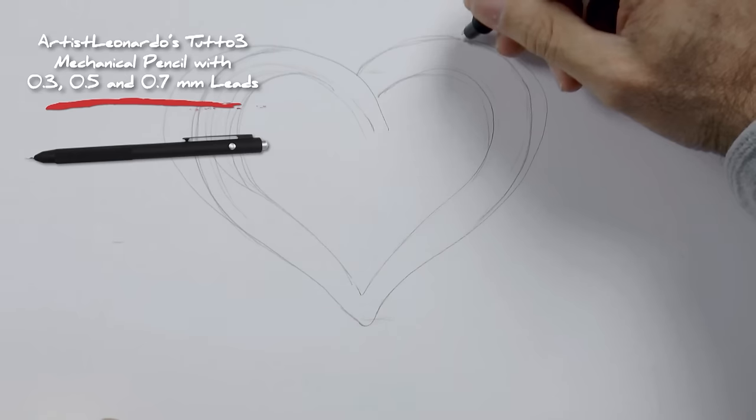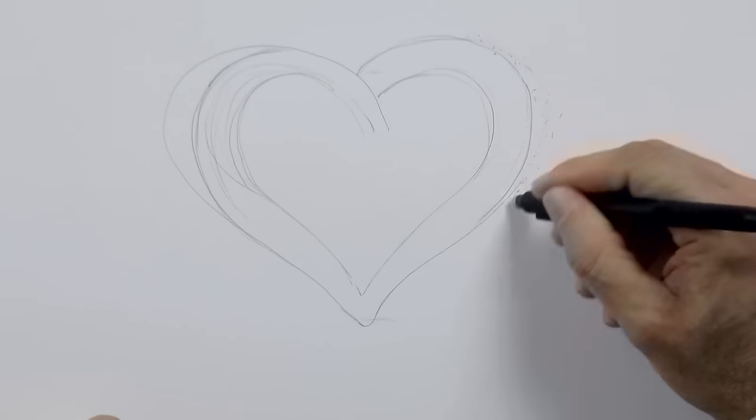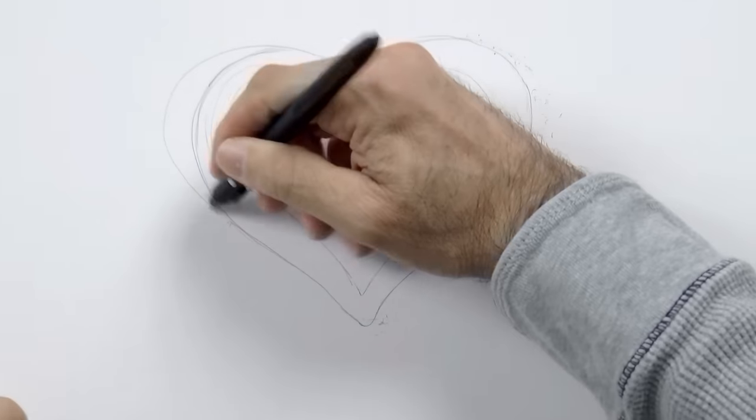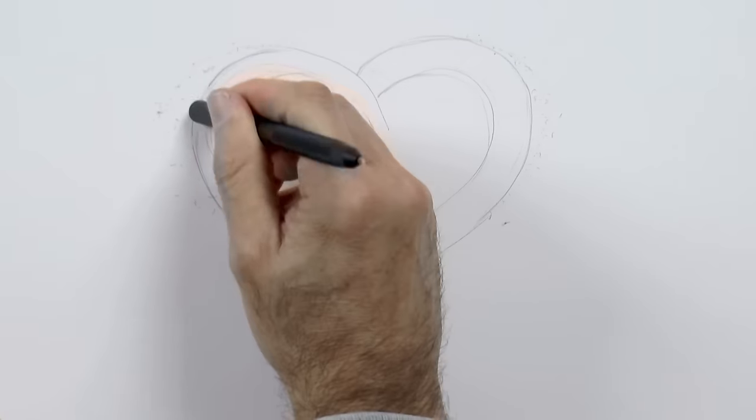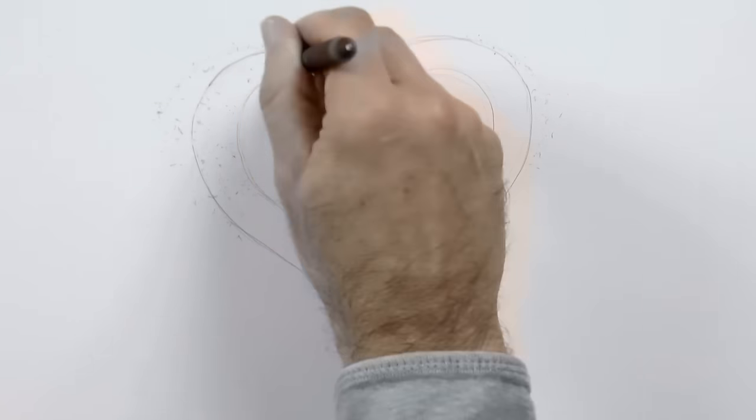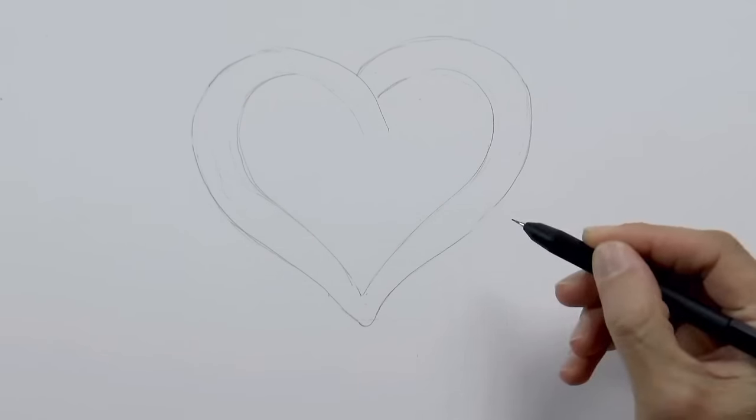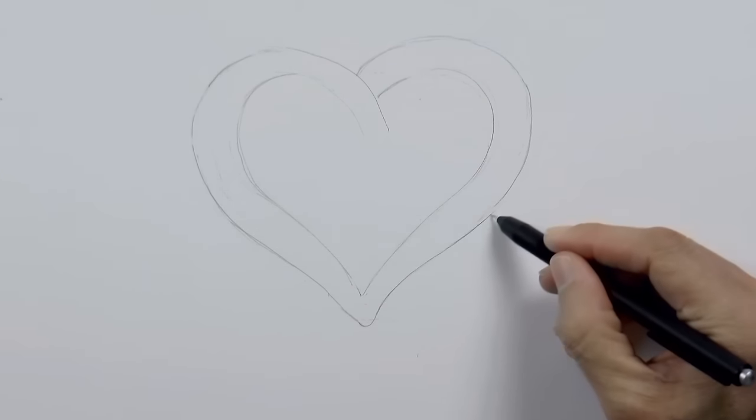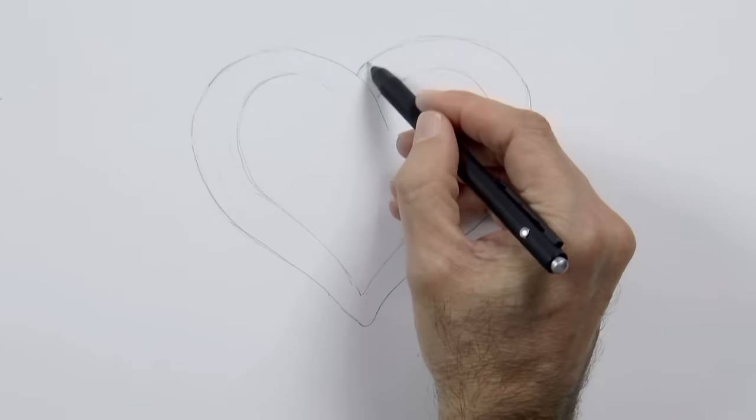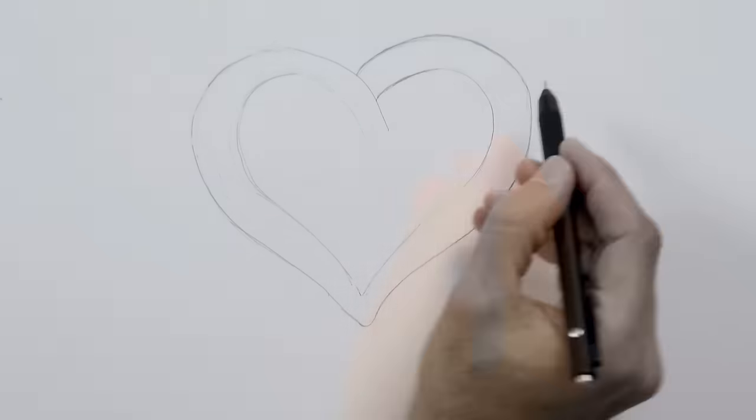My great tuto 3 pencil has an eraser in the back, we will use it for this. The first strokes don't need to be perfect, so we shouldn't be afraid to start. Sometimes it is hard to begin, to break the white of the paper. But if we have a line down, even if it's not perfect, we can then correct it.